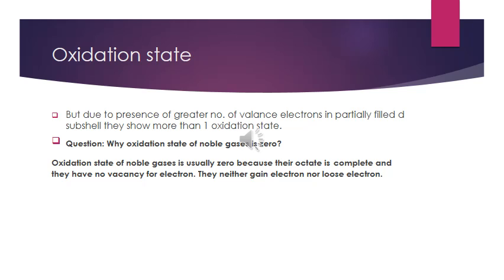However, due to the presence of a greater number of valence electrons in a partially filled D sub-shell, transition elements have a tendency to show more than one oxidation state. Noble gases are called the zero group because their oxidation state is zero — noble gases neither lose nor gain electrons because their valence shell is already complete, which is why their oxidation state is zero.